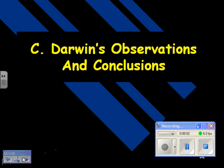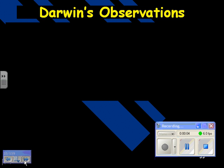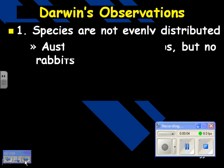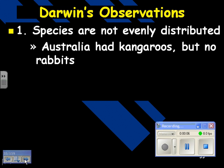Darwin's observations and conclusions. His observations were that species are not evenly distributed. For example, Australia has kangaroos but no rabbits.